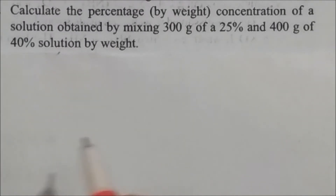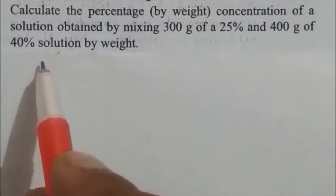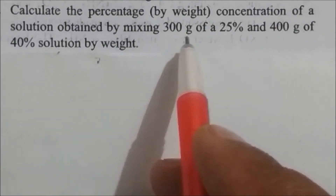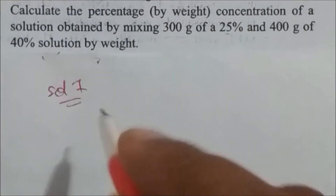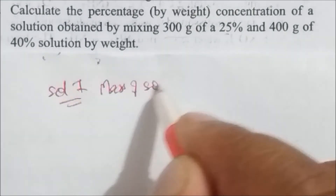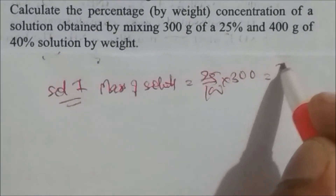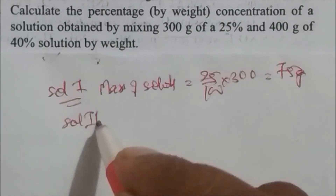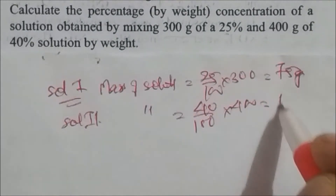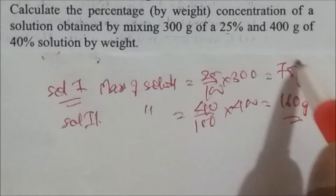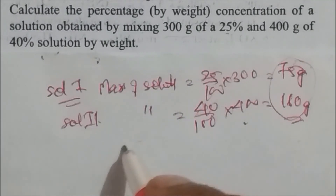Calculate the percentage by weight concentration of a solution obtained by mixing 300 grams of a 25% solution and 400 grams of a 40% solution by weight. For solution one: mass of solute = 25% of 300 = 75 grams. For solution two: mass of solute = 40% of 400 = 160 grams.